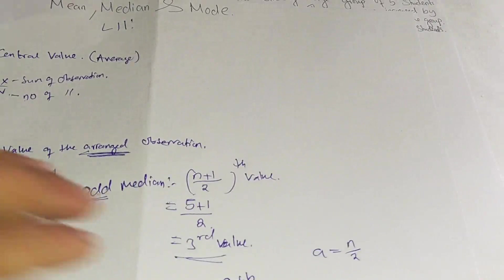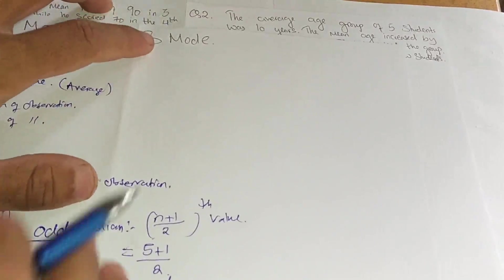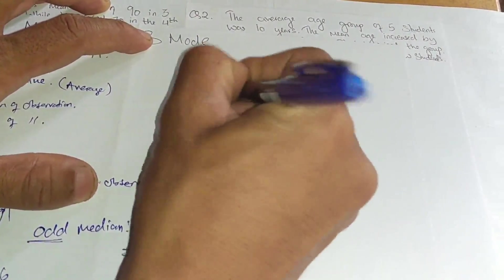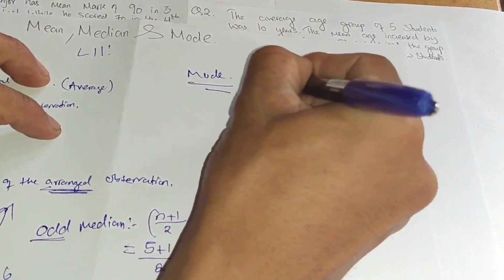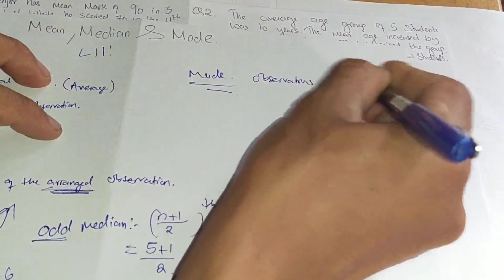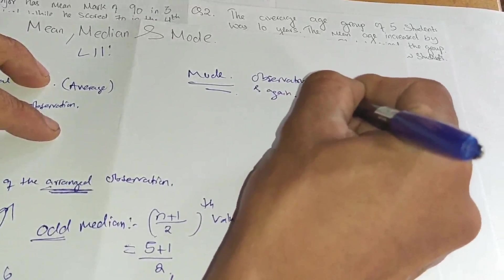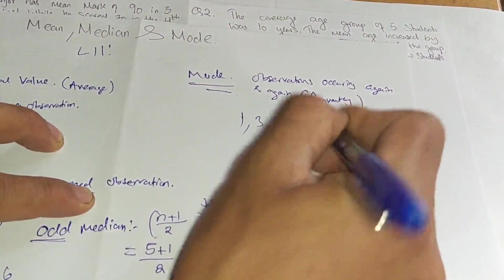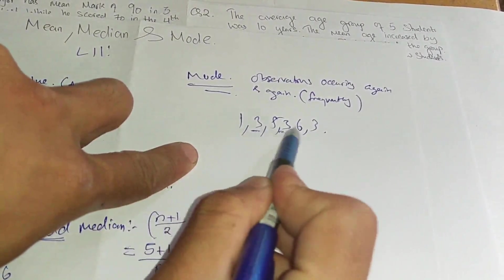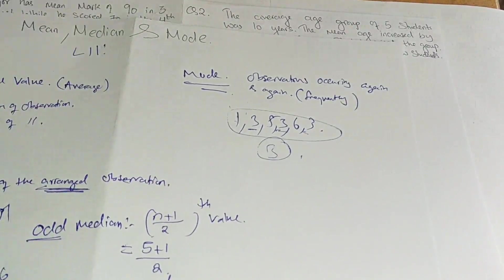Now for mode. Mode is simply the observation occurring again and again — the observation that repeats most frequently. For example, in observations 1, 3, 5, 3, 6, 3 — the number 3 repeats the most, so the mode is 3.